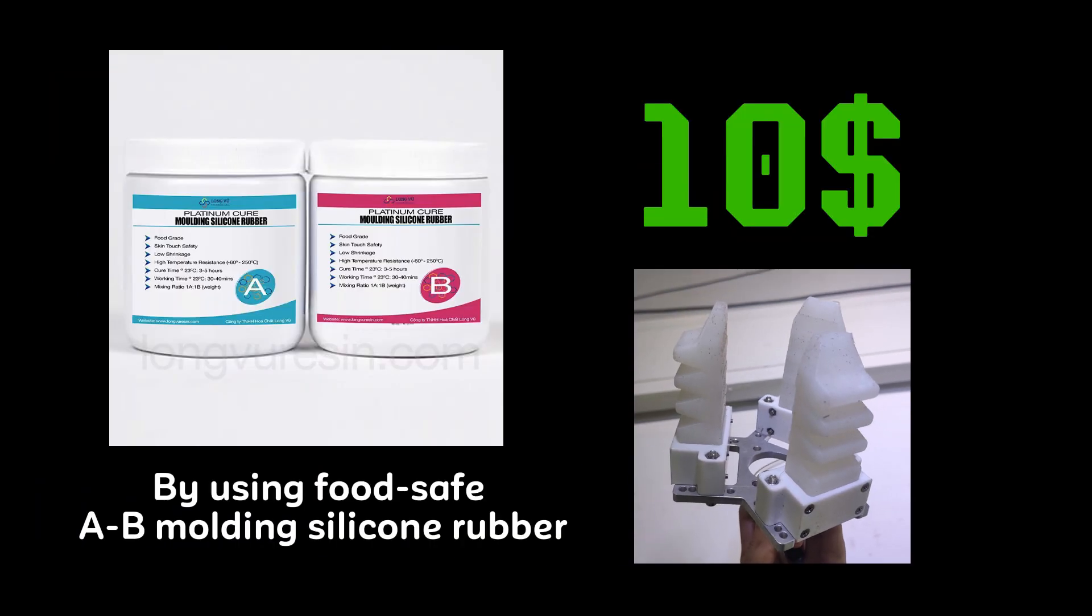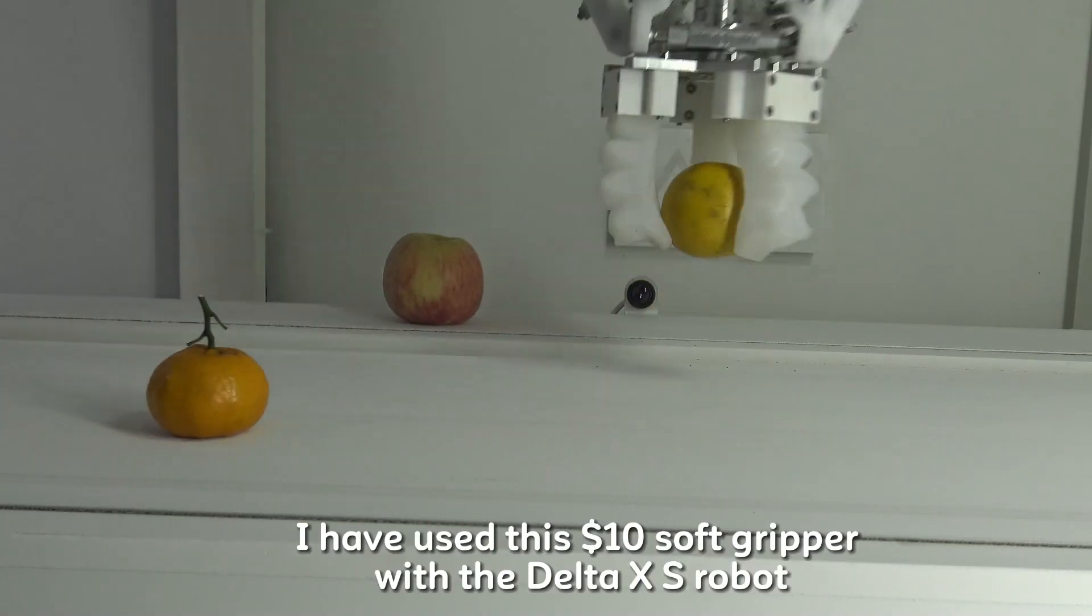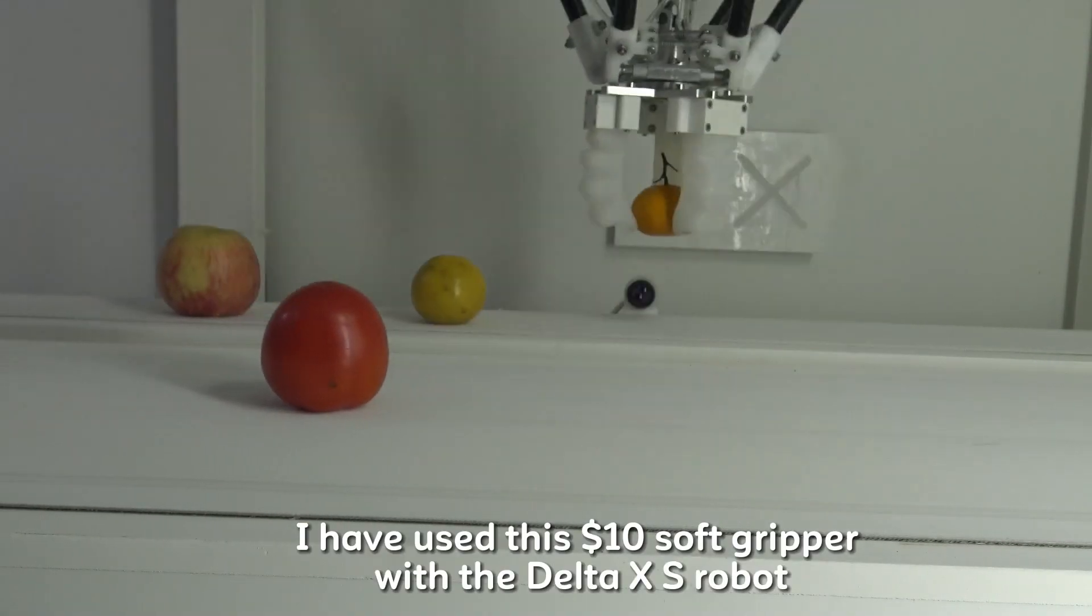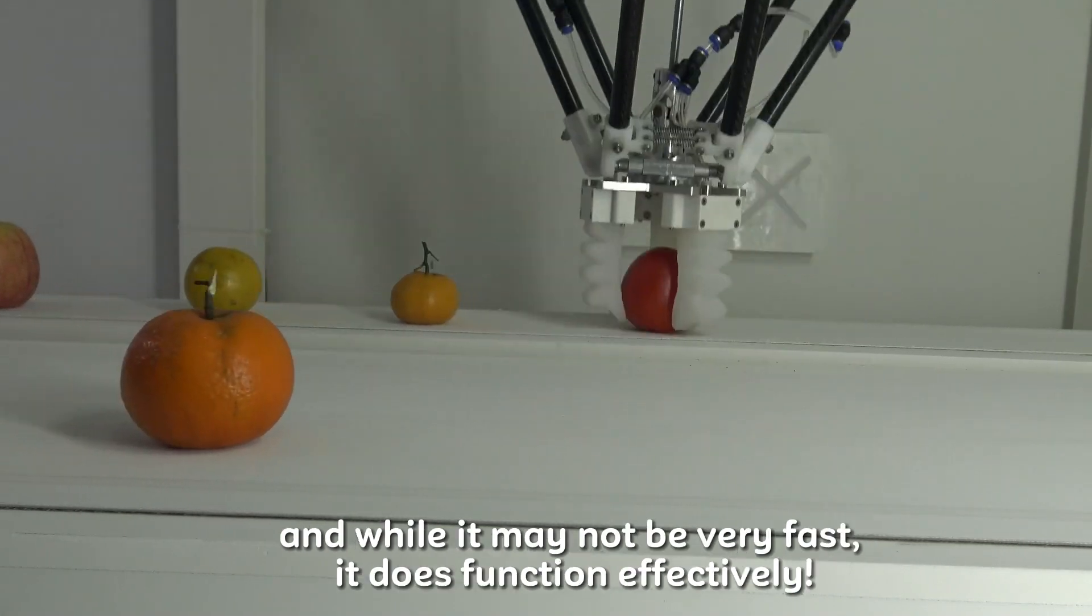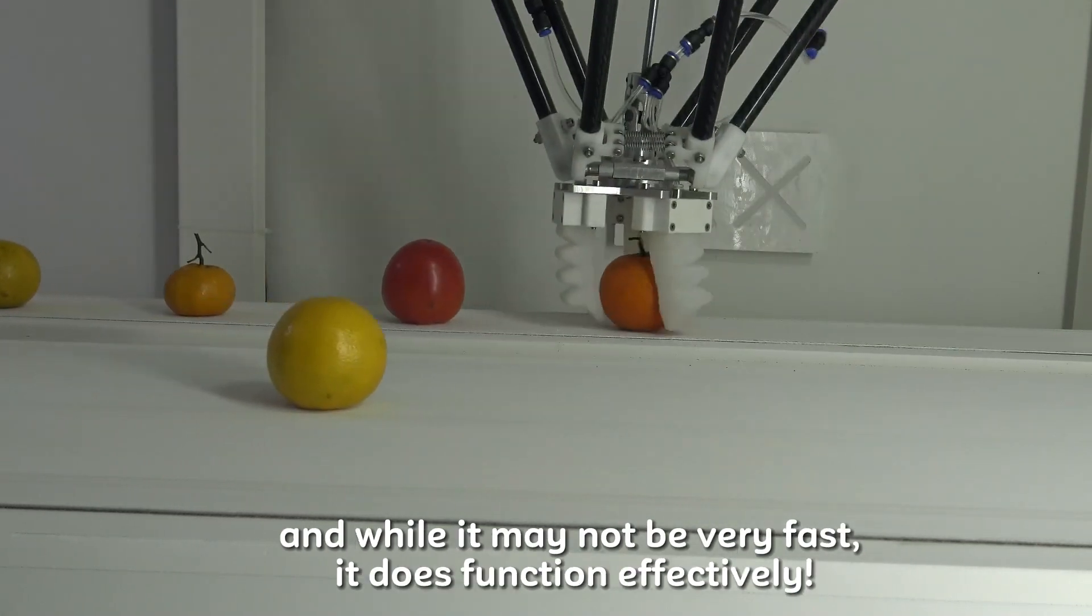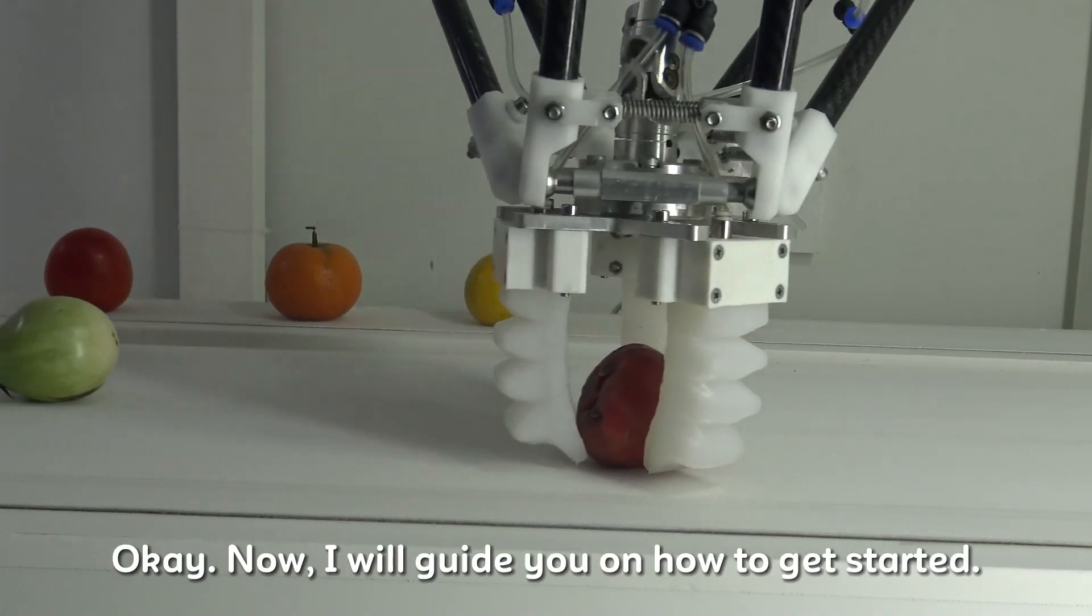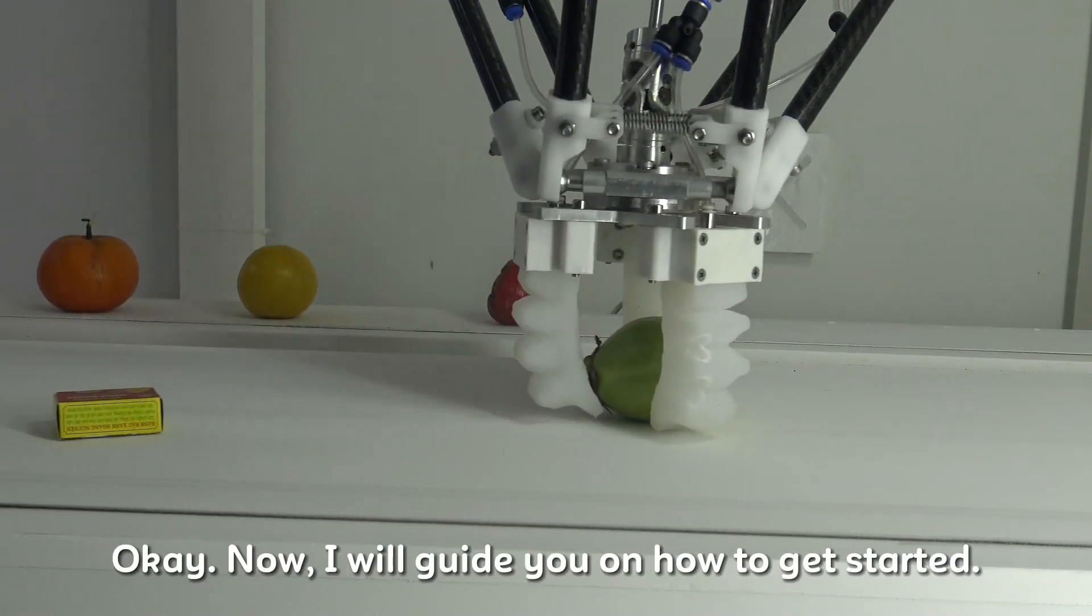By using FoodSafe AB molding silicone rubber, I have used this $10 soft gripper with the Delta XS robot. And while it may not be very fast, it does function effectively. Now, I will guide you on how to get started.